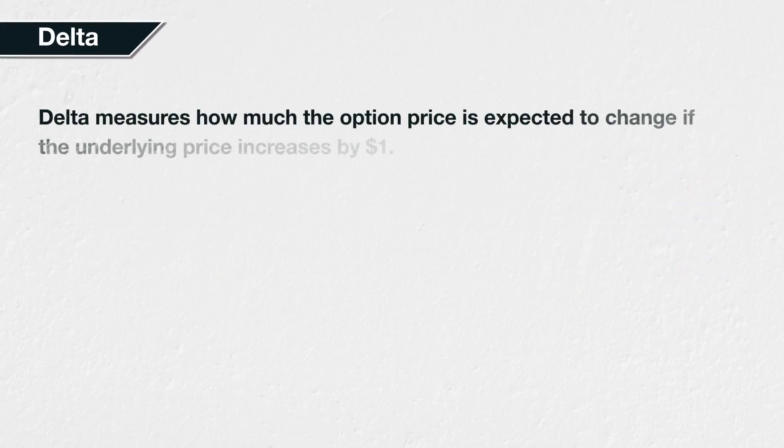Delta is a measure of the option price's sensitivity to movements in the underlying asset price. Specifically, the delta tells you how much the option price is expected to change if the underlying asset price increases by $1. Delta can be positive or negative.